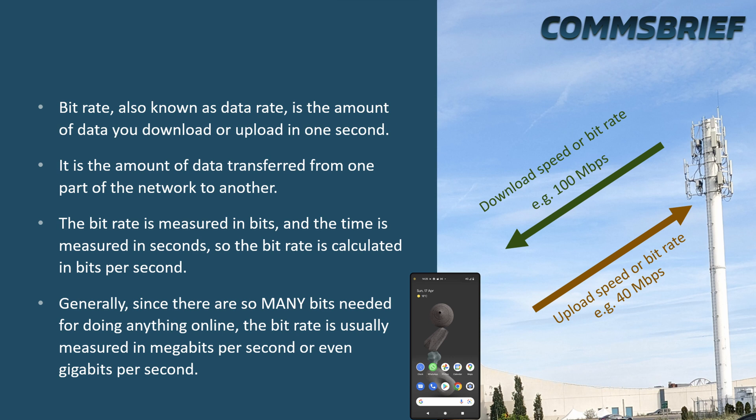What do we mean by 'part of the network'? Let's have a look at the picture on the right. The cell tower, also known as a base station, is one part of the network, and the cell phone, also known as a mobile station, is another part. So the download data rate is the amount of data transferred from the cell tower to the cell phone in one second, and the upload data rate is the amount of data transferred from the cell phone to the cell tower in one second.